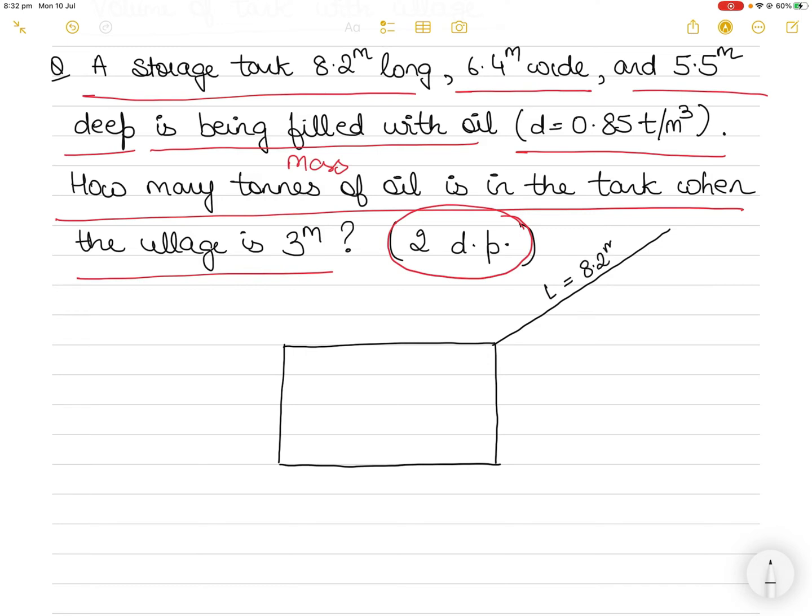So length equals 8.2 meters. The width of the tank or the breadth of the tank is 6.4 meters. Units are very important. So make sure that you keep writing the units and the total depth of the tank or the height of the tank you can say is 5.5 meters.